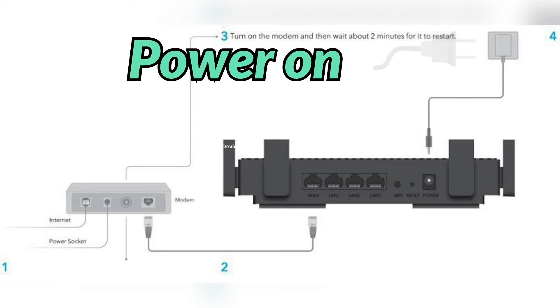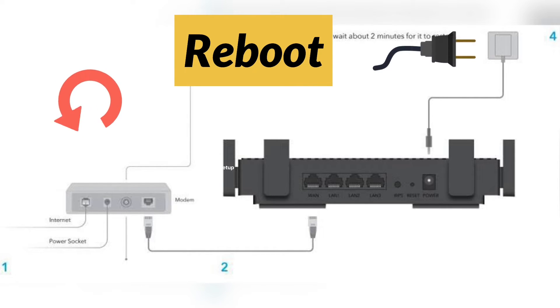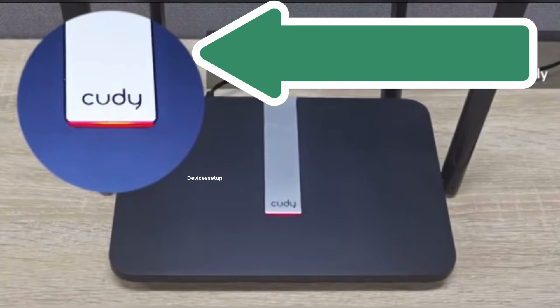Now power on your Kuddy router using the power adapter and let it reboot. It usually takes around a minute to come up, and the power LED will turn solid after this.